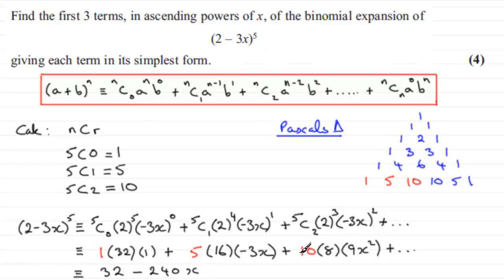It turns out to be minus 240x. And then for the last term, it's going to be a positive term. And then when you work this out, you get plus 720x squared. And again, plus and so on.